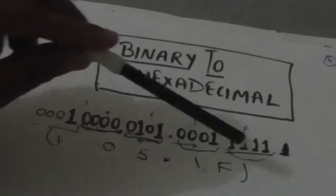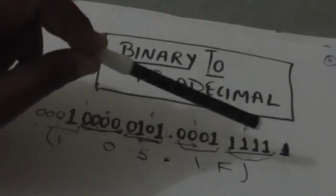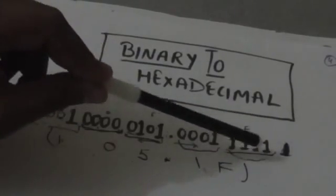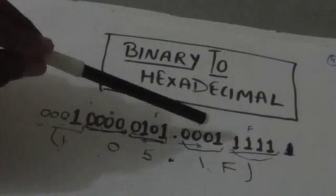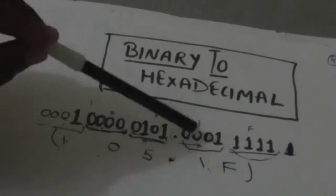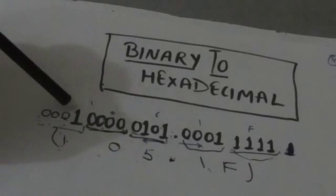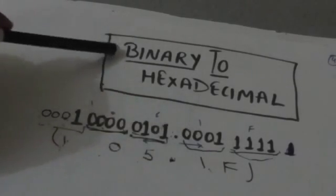Now write a hexadecimal number corresponding to each group. This group 1 1 1 1 represents a value of 15. The hexadecimal digit F has a value of 15, so F is written corresponding to this group. This binary number represents a value of 1, so we write 1. The group 0 1 0 1 represents a value of 5, so we write 5. This group represents 0, so we write 0. This group represents 1, so we write 1. The position of the radix point remains fixed.